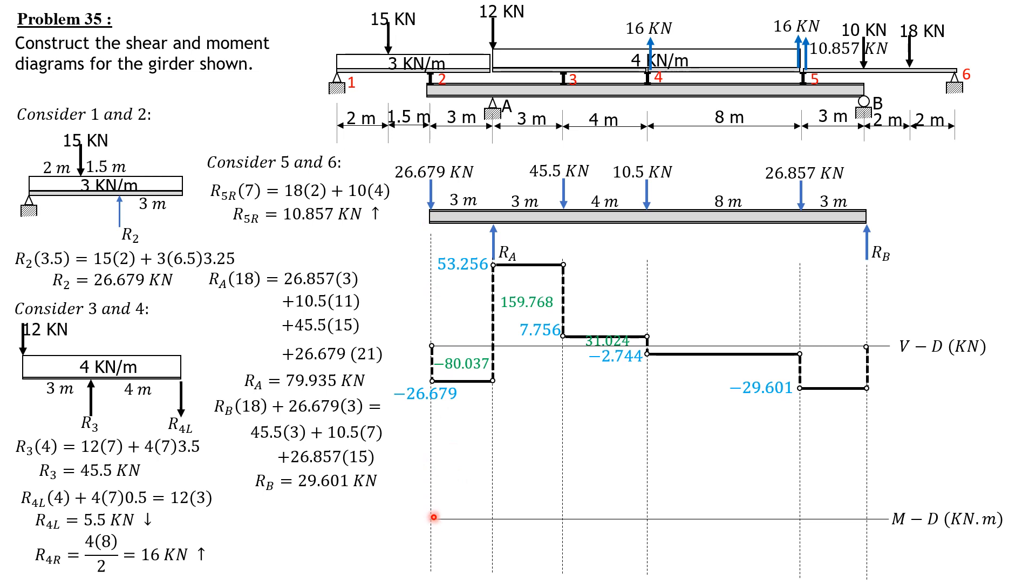From zero moment here, we have a constant slope straight line downward: negative 80.037. Zero plus negative 80.037, then negative 80.037 plus 159.768, straight line, should be 79.731. Plus 31.024, that would be 110.755, straight line only. It goes down: 110.755 minus 21.952 equals 88.803, then minus 88.803, so the moment diagram also closes.